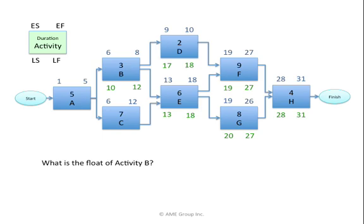Now I ask what's the latest C may finish. E has a late start of day 13, meaning the latest C can finish is day 12. The latest C may start: 12 minus 7 plus 1 equals day 6. For activity A — what's the latest A may finish for B to start by day 10 and C by day 6? I look at the smaller number, day 6. The latest A may finish is day 5. With A being 5 days long, 5 minus 5 plus 1 equals day 1 as the latest A may start. To answer the question about float of B, I only needed to go back as far as B.